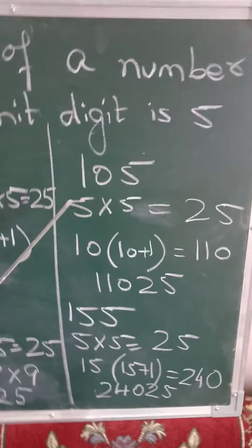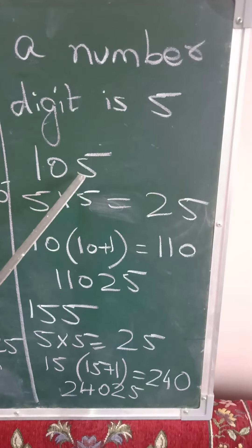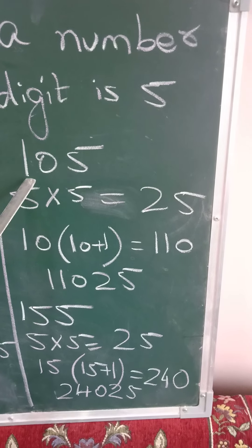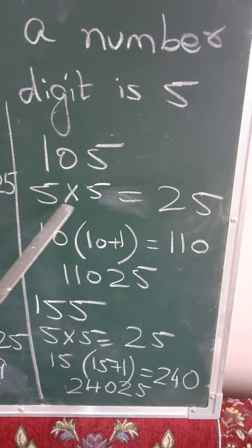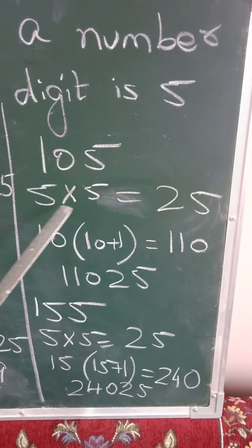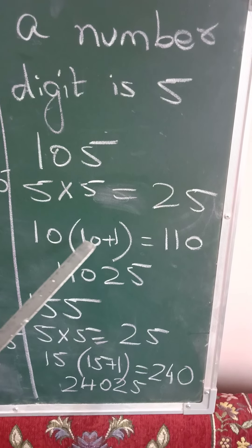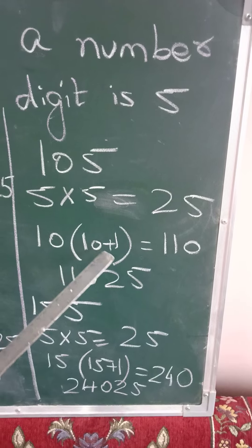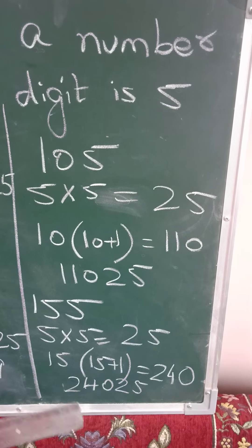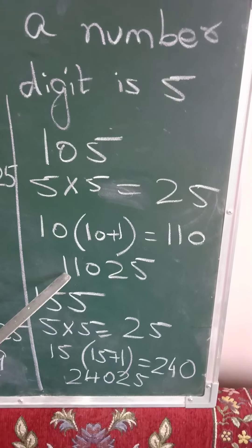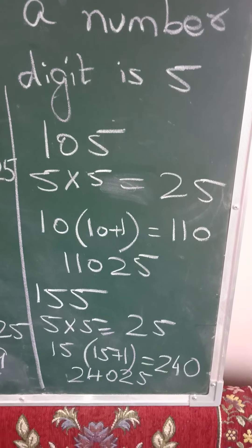Third example we will see, 105. Here we can do 3 digit also very easily. Again, the last digit is 5. 5 into 5, 25. 10, 10 plus 1, 11. The next number. So 11 tens are 110. Everybody knows that. So 11025 is the answer.